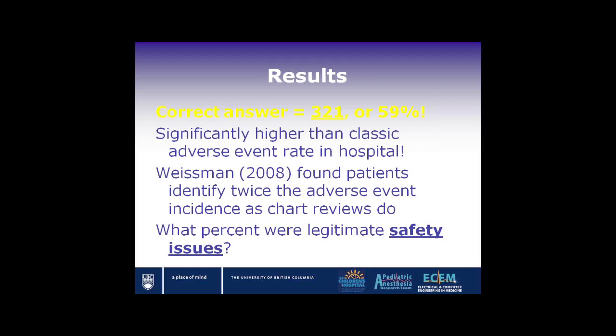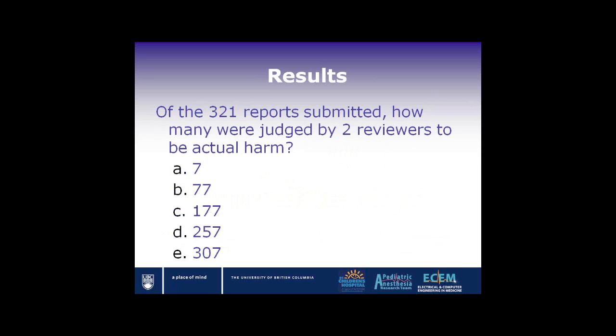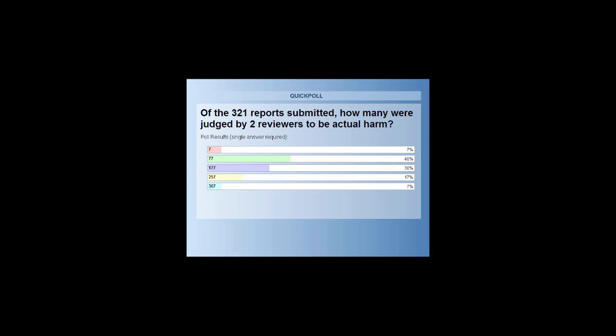The next question: given that the rate is pretty high, what percent are actually legitimate safety concerns versus dissatisfiers? Poll results: 7% thought 7 were judged to be actual harm, 40% thought 77 out of 321, 30% thought 177 out of 321, 17% thought 257, and 7% thought 307. What we found in our study was 177 — guessed correctly by about 30% of people. It was a two-reviewer system to identify the report — basically, did it seem legitimate?